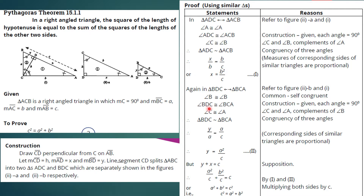The second statement is: angle BDC is congruent to angle BCA, both equal to 90 degrees. The third statement is: angle C is congruent to angle A, because angle C and angle A are both complements of angle B. Therefore all three angles are congruent, confirming that triangle BDC is similar to triangle BCA.